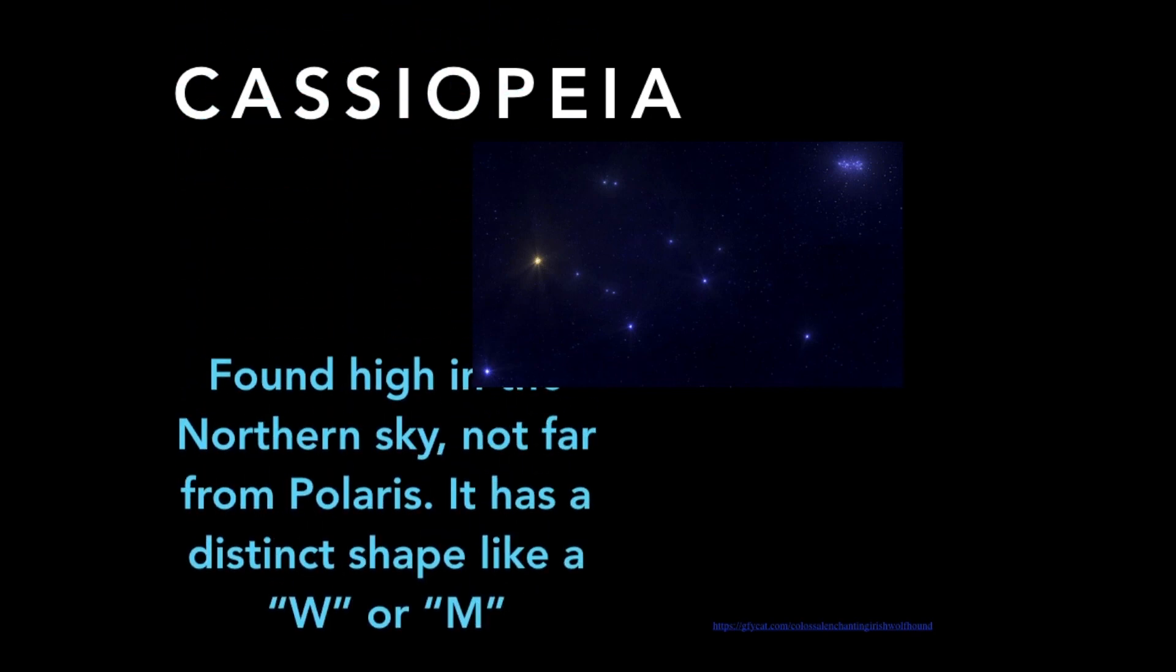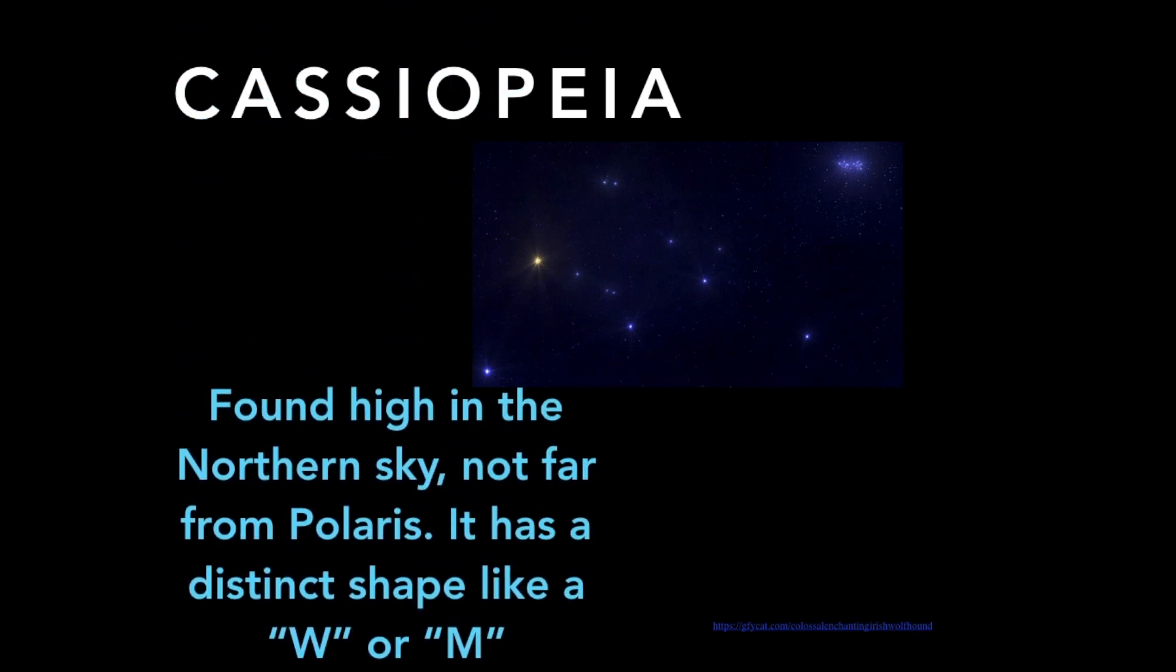Cassiopeia was named after the Queen of Ethiopia which can be seen in the Northern Hemisphere all year long. It has a distinct shape like W or M.